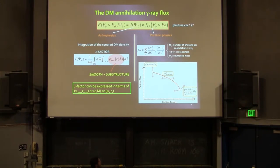You have to compute the number of photons that you expect per annihilation for a given annihilation channel. There are different channels, different possibilities. But I'm not going to talk about this in my talk, so I will focus on the J-factor part.